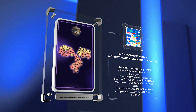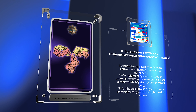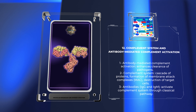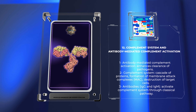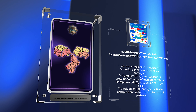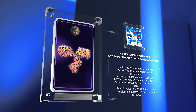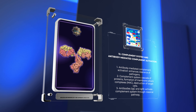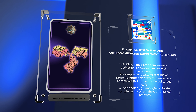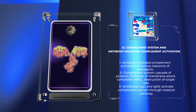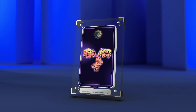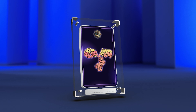Antibody-mediated complement activation is a vital immune defense mechanism that enhances the clearance of pathogens. The complement system consists of a cascade of proteins that, when activated, lead to the formation of membrane attack complexes (MAC) and the destruction of target cells. Antibodies, particularly IgG and IgM, can activate the complement system through the classical pathway. Antibody binding to antigen facilitates recruitment of complement proteins, leading to MAC formation, which creates pores in the cell membrane resulting in cell lysis.